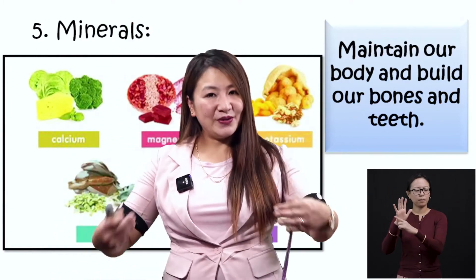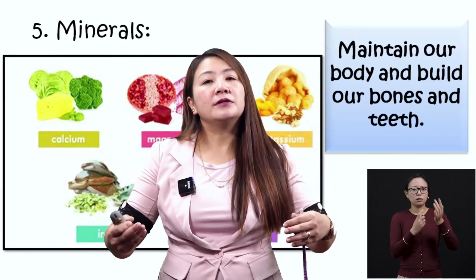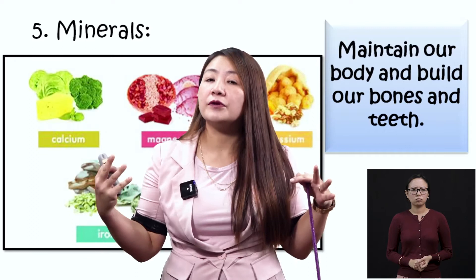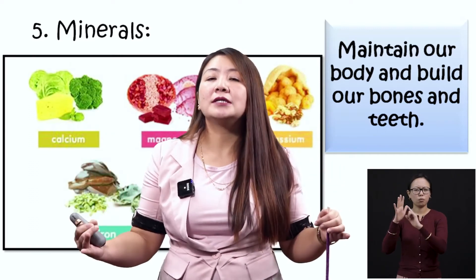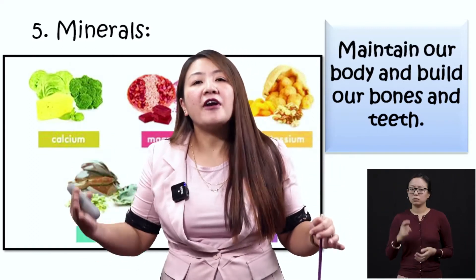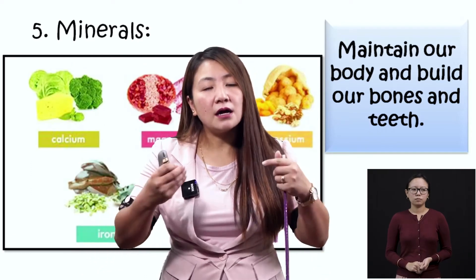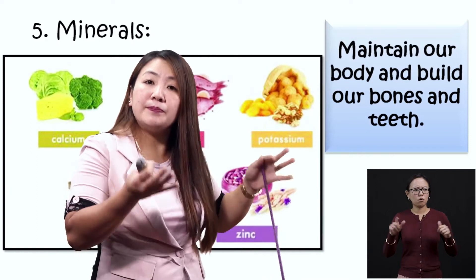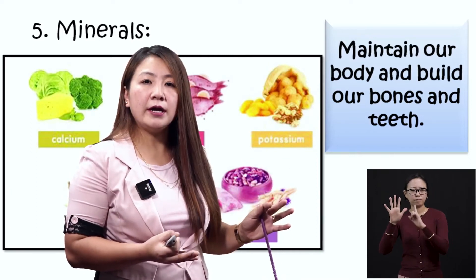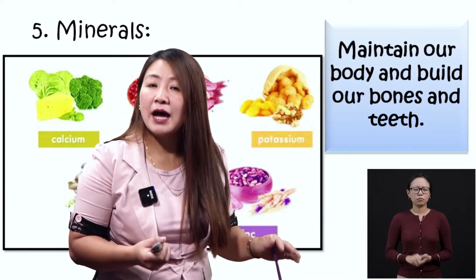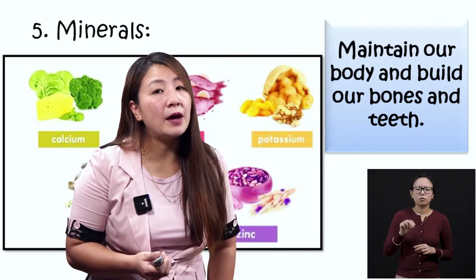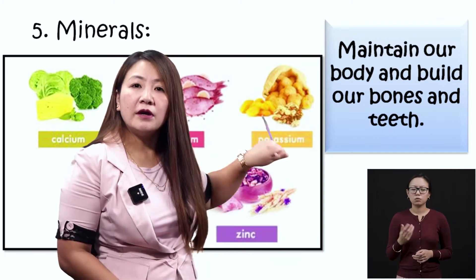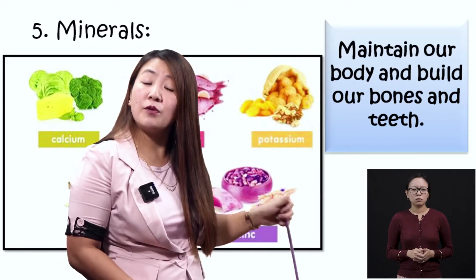So these are the five types of nutrients. Our nutrition should contain all these different types of food — carbohydrates, proteins, vitamins, fats, and minerals. Our diet or food should contain all of these in balance. Or else, what will happen if you don't eat proper food?